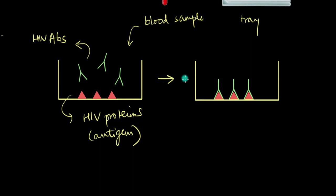So it's going to look something like this. So you can see that the antibodies have bound with the HIV proteins, aka the antigens. So this is the first antigen-antibody binding that has already occurred.